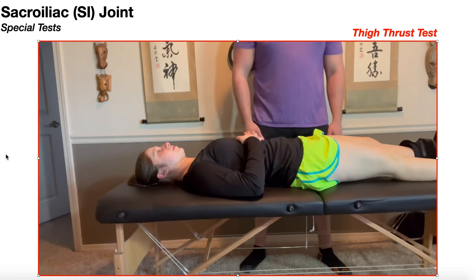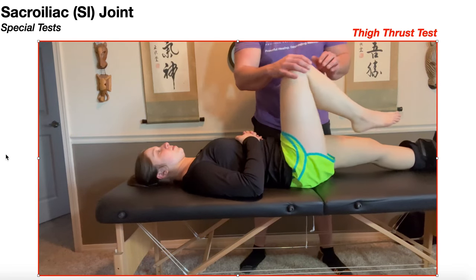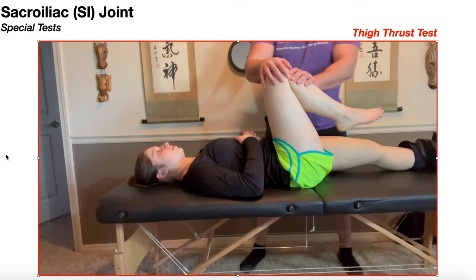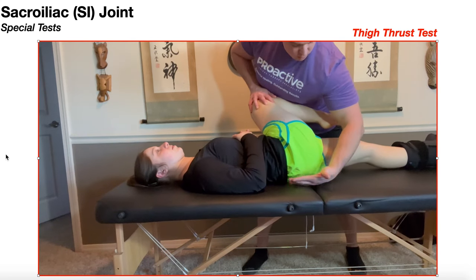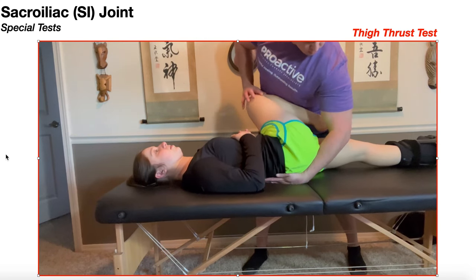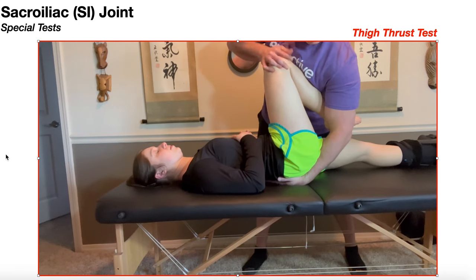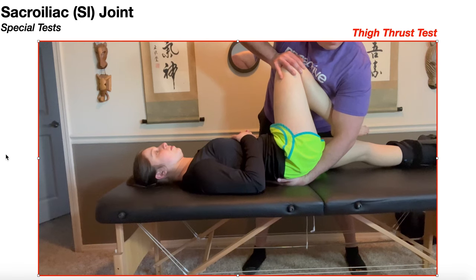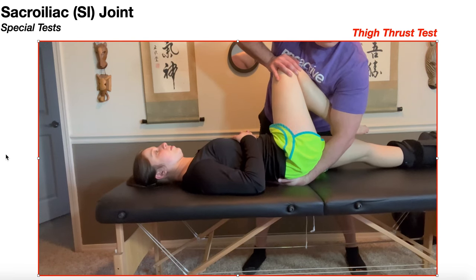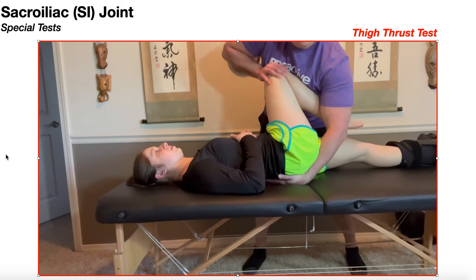To recap the thigh thrust test: bring the symptomatic hip into flexion with the knee bent, place your hand directly under the patient's sacrum with fingers pointing toward their head, roll them back onto your hand, slight adduction, and apply three to six high velocity thrusts downward with increasing force after each repetition.